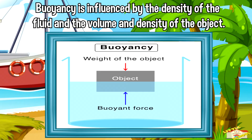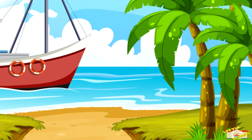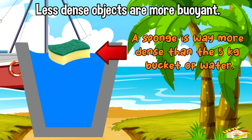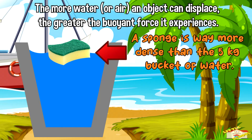Buoyancy is influenced by the density of the fluid and the volume and density of the object. Less dense objects are more buoyant. Also, the more water or air an object can displace, the greater the buoyant force it experiences.